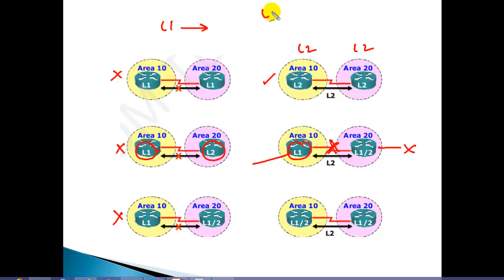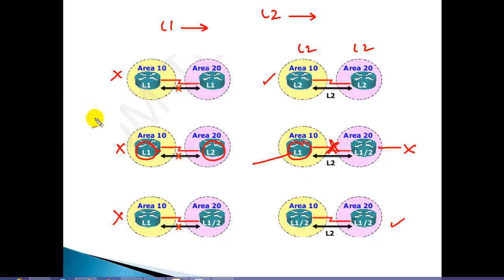The simple rule is: Level 1 will not work for the exchange of routes in different areas, and Level 2 will not work for the exchange of routes within the same area. These are the key combinations to understand in order to easily design IS-IS networks.